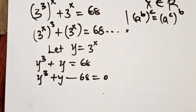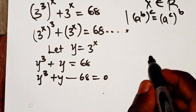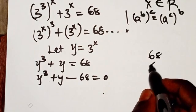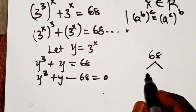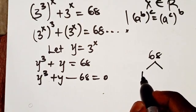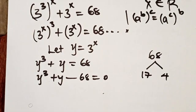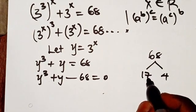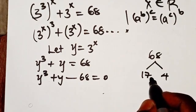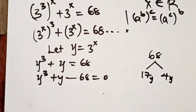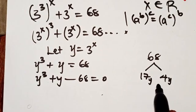Rearranging, we get Y^3 + Y - 68 = 0. This is a cubic equation because the highest power of Y is 3. Now, notice that 68 can be written as 17 times 4. We are going to use this factorization to help us.